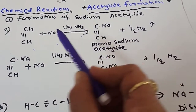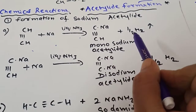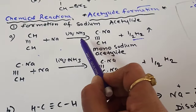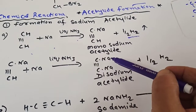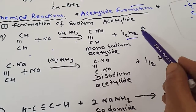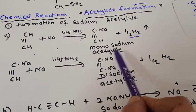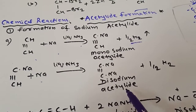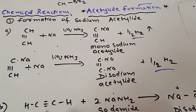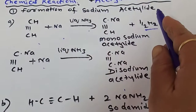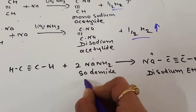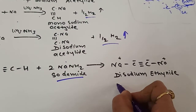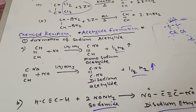The first is the formation of sodium acetylide. When acetylene reacts with sodium in the presence of liquid ammonia, it forms monosodium acetylide and half a mole of H2 gas is eliminated. This monosodium acetylide again reacts with a second atom of sodium in the presence of liquid ammonia to form disodium acetylide and another half mole of H2 gas. Alternatively, acetylide can react directly with sodium to give disodium ethanide.